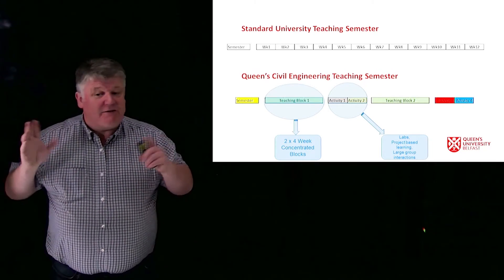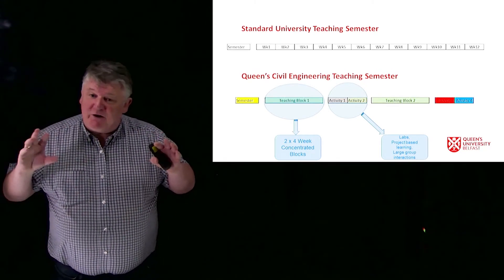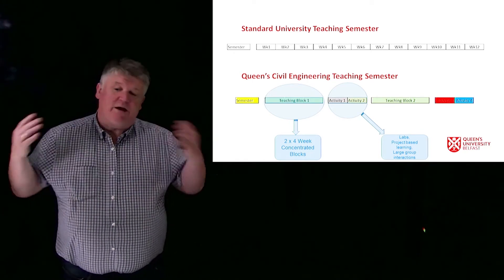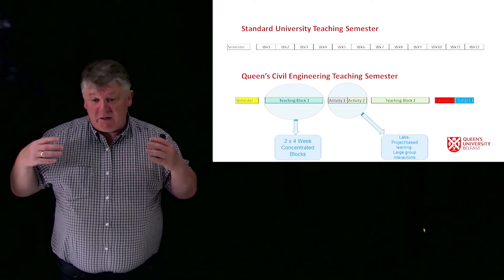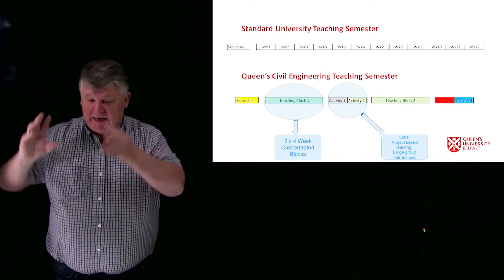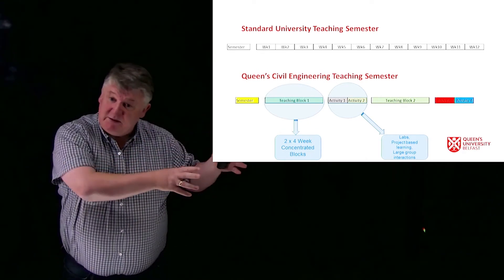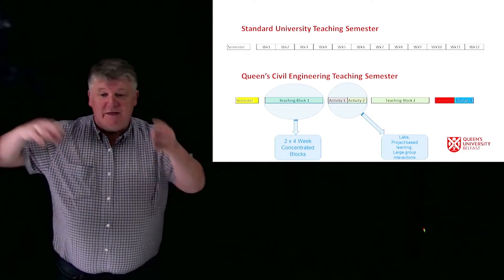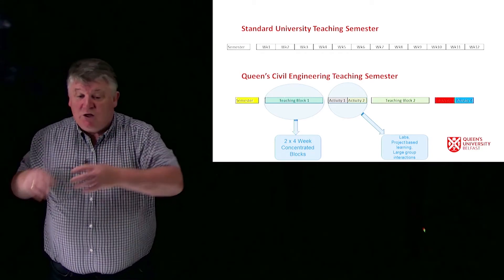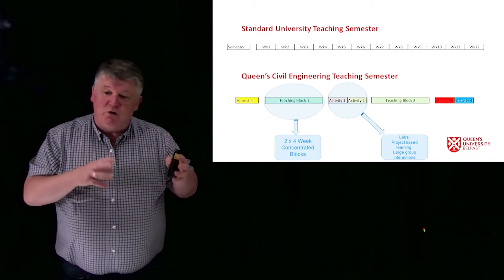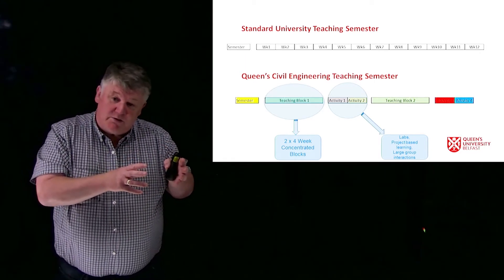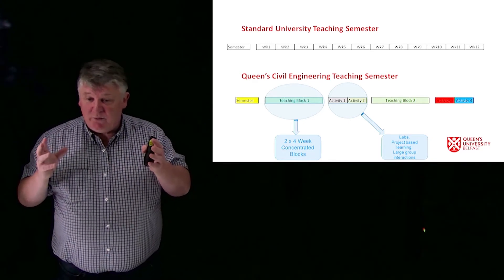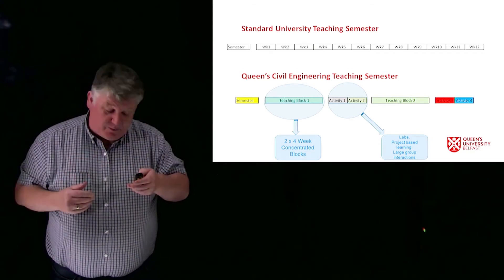At Queen's we also teach in a slightly different way to most universities. A standard university will have a semester of 12 weeks where every week is identical. At Queen's we've turned that on its head — we've split our years up into blocks. Our students undertake a teaching block, followed by an activity block, followed by a teaching block and another activity block. In those activity blocks they put into practice the information learned in the teaching block — doing labs and problem-based learning activities in small groups. There's a video called the Bridge Project at Stage 1 which I'd recommend you watch to see an example of this.